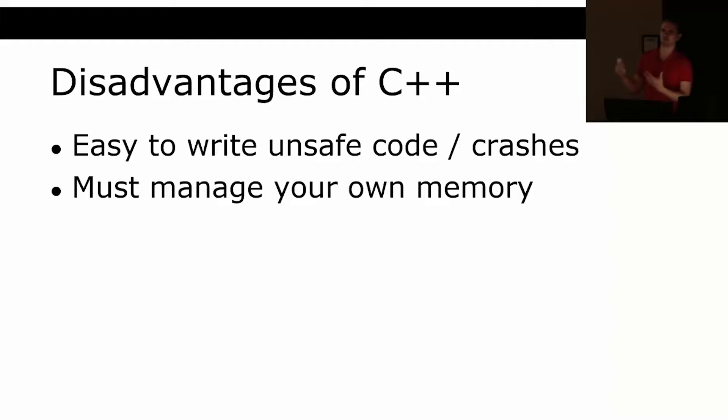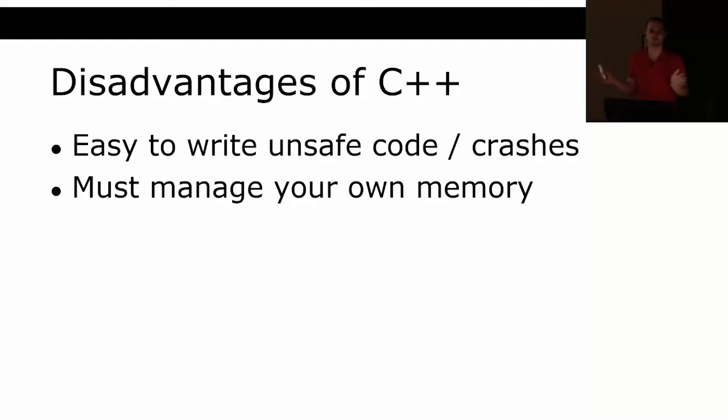RAII is a programming paradigm where if you need to allocate memory, you create a class that allocates in the constructor and deallocates in the destructor. If you do that, it doesn't even look like you're managing memory at all — it looks just like any other garbage-collected language, except you're the garbage collector. And if you're the garbage person, you can put the garbage wherever you want.